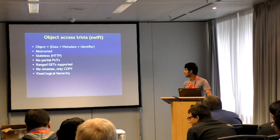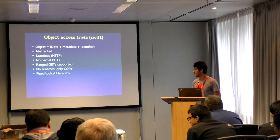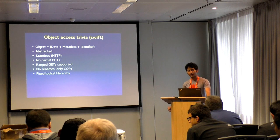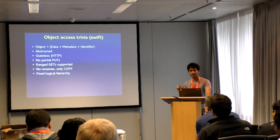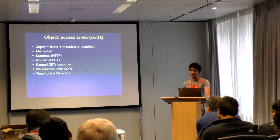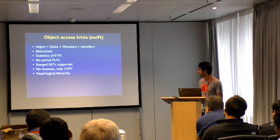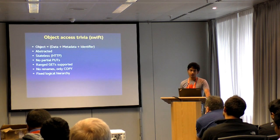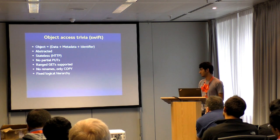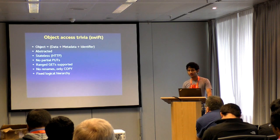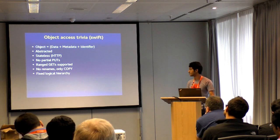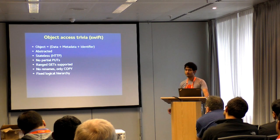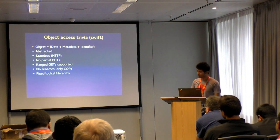There are things that make object-based access easier for implementers. One is there's no append — you just upload an object; if you want to add something, you upload a new object. But ranged GETs are supported, so clients can ask for a certain byte range, enabling partial downloads and pause-and-resume. No renames, only copy — that's a feature of Swift specifically, which makes things simpler. The logical hierarchy is fixed: containers and then objects inside them.